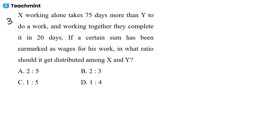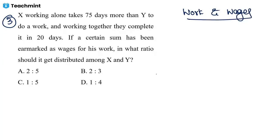This is a work and wages related question. One of your friends asked about this yesterday. X working alone takes 75 days more than Y to do a work, and working together they complete it in 20 days. If a certain sum has been earmarked as wages for this work, in what ratio is it distributed? Work and wages means payment according to the work done — if you do more work you get more payment.